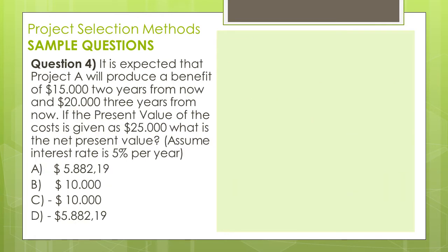Question number 4: It is expected that Project A will produce a benefit of $15,000 two years from now and $20,000 three years from now. If the present value of the cost is given as $25,000, what is the net present value?